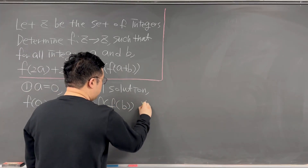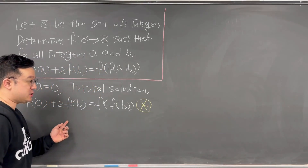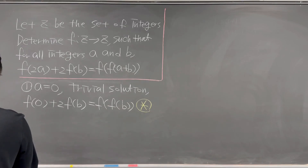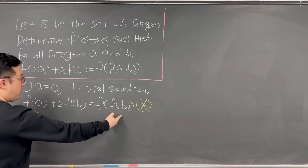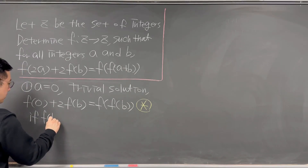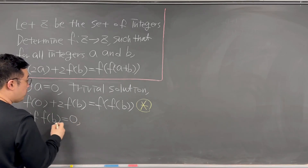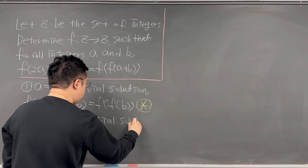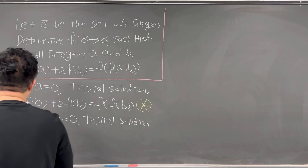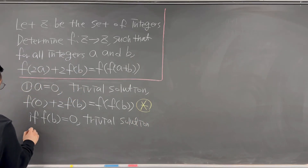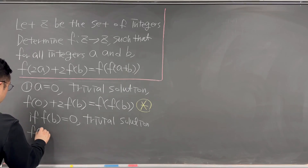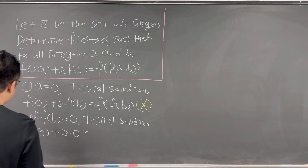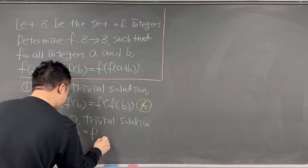I'll be calling this equation as the star, because this will be the important condition for our solution development. So in this case, we can consider if f of b is equal to 0, then we will get a trivial solution. We can check: f of 0 plus 2 times 0 is just going to be f of 0.